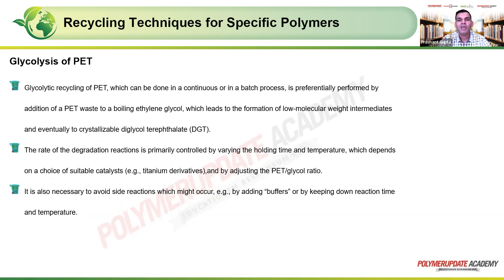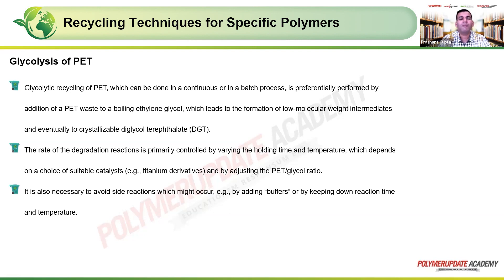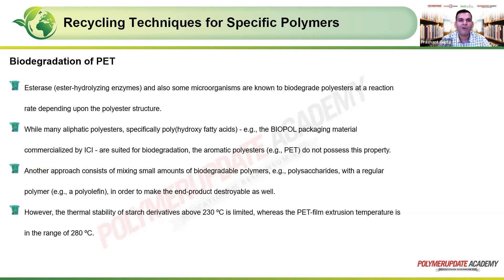Glycolytic recycling of PET can be done in a continuous or batch process, performed by adding PET waste to boiling ethylene glycol, leading to formation of low molecular weight intermediates and eventually to crystallized diethylene glycol terephthalate. The reaction rate is controlled by residence time, temperature, catalyst (such as titanium derivatives), and the PET-to-glycol ratio. It is also necessary to avoid side reactions by adding buffers or by keeping reaction time and temperature down.